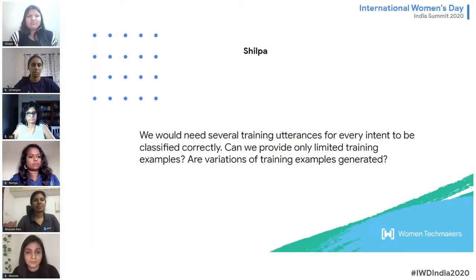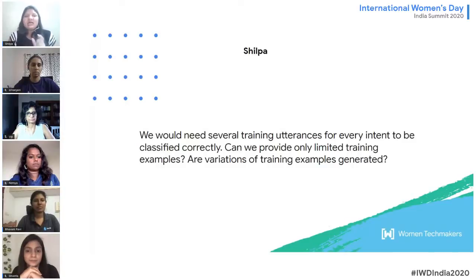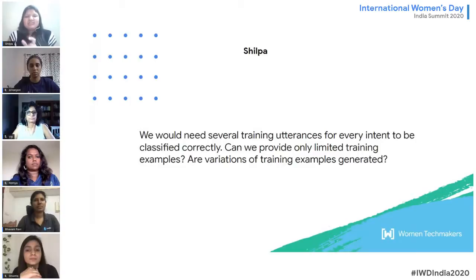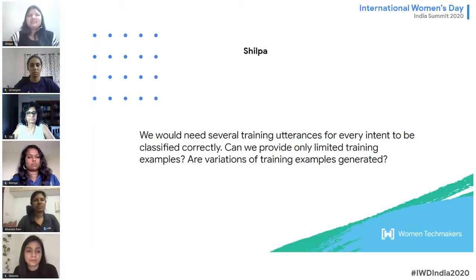Variations of training examples are not generated automatically in Dialogflow. Before entering the next training example into Dialogflow, always test whether Dialogflow is able to trigger the particular intent for that example. If it can trigger the intent, you don't need to add that training example; if it cannot, then you should add it.